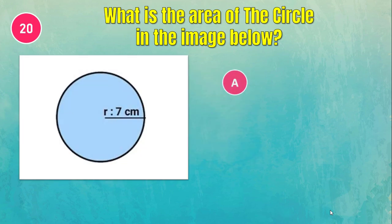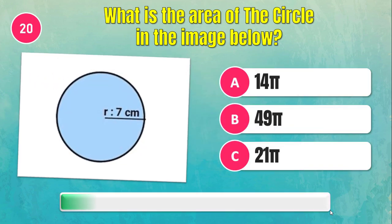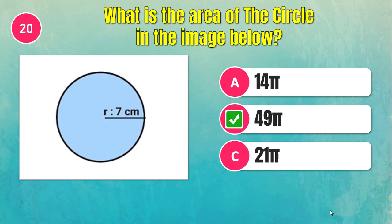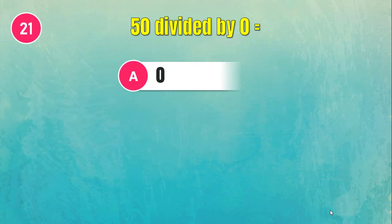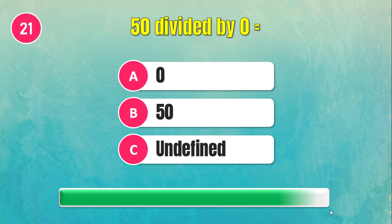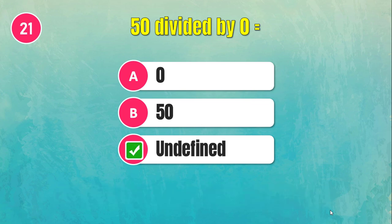What is the area of the circle in the image below? 50 divided by 0 — the answer is undefined.